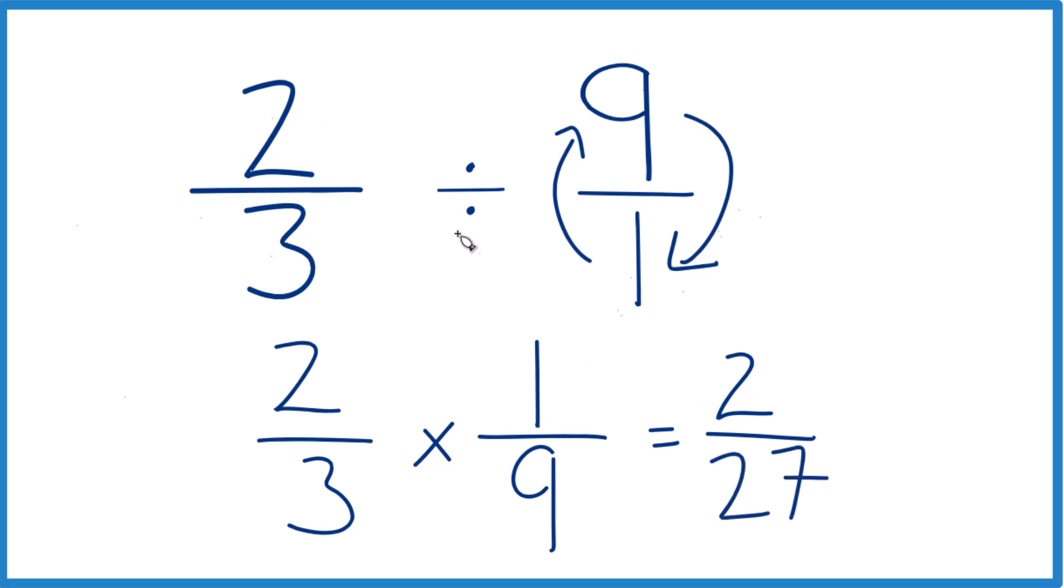So, turns out that 2/3 divided by 9, that equals 2/27. That's it.